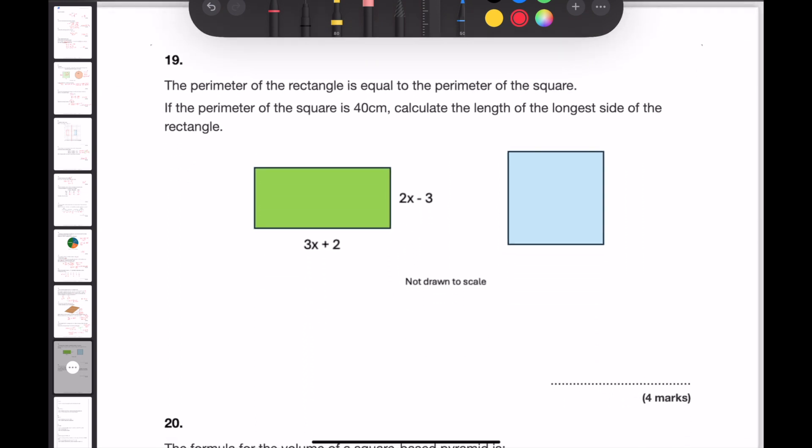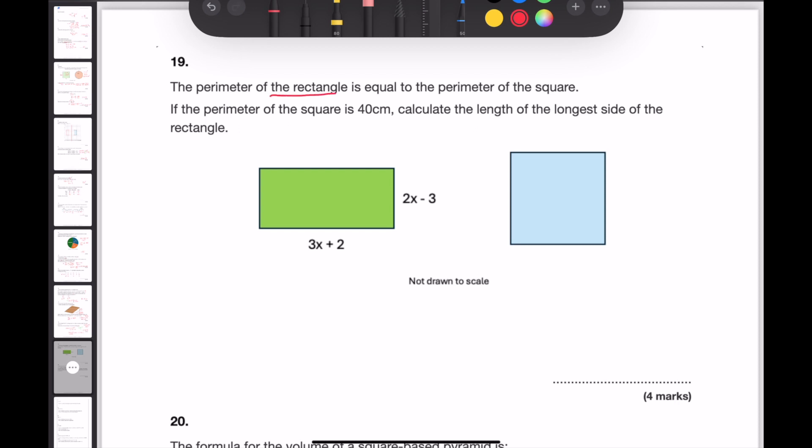Question 19. The perimeter of the rectangle is equal to the perimeter of the square. If the perimeter of the square is 40cm, calculate the length of the longest side of the rectangle. Because the perimeter of the rectangle is equal to the perimeter of the square, the first thing that we need to do is come up with an expression for the perimeter of the rectangle. Knowing that I can add the length and the width together and times it by 2 to find the perimeter, I will get 3x add 2 plus 2x minus 3 and in brackets with the 2 on the outside. Simplifying the bit inside the brackets would give me 2 lots of 5x minus 1 and therefore an expression for the perimeter would be 10x minus 2.